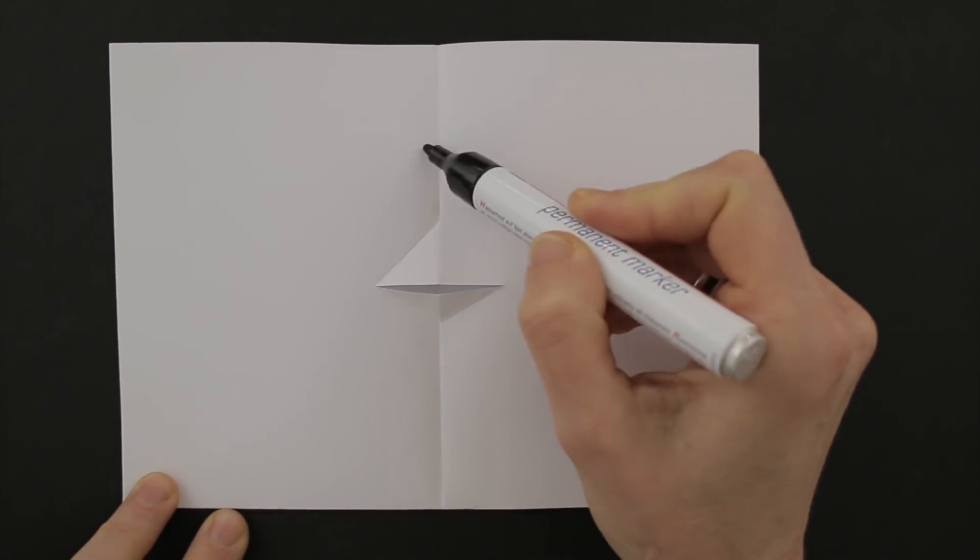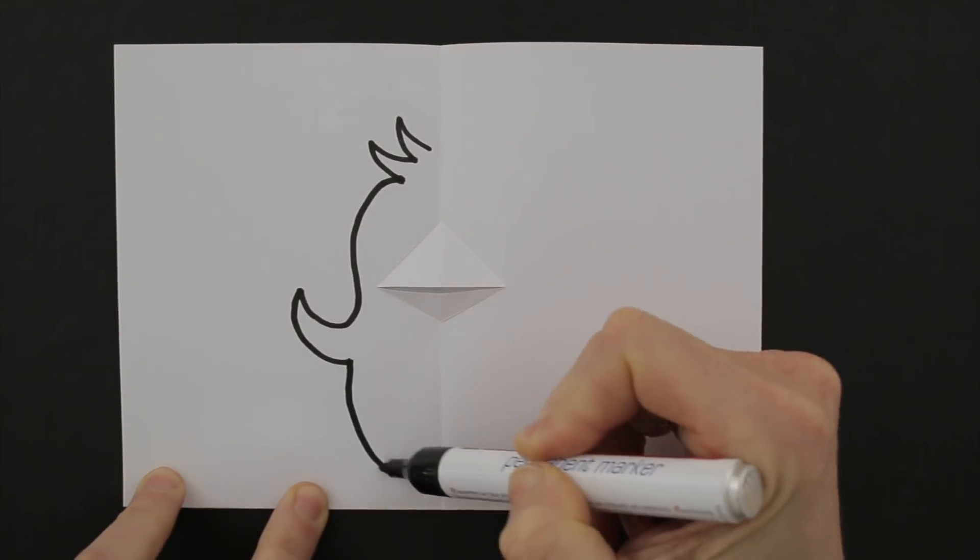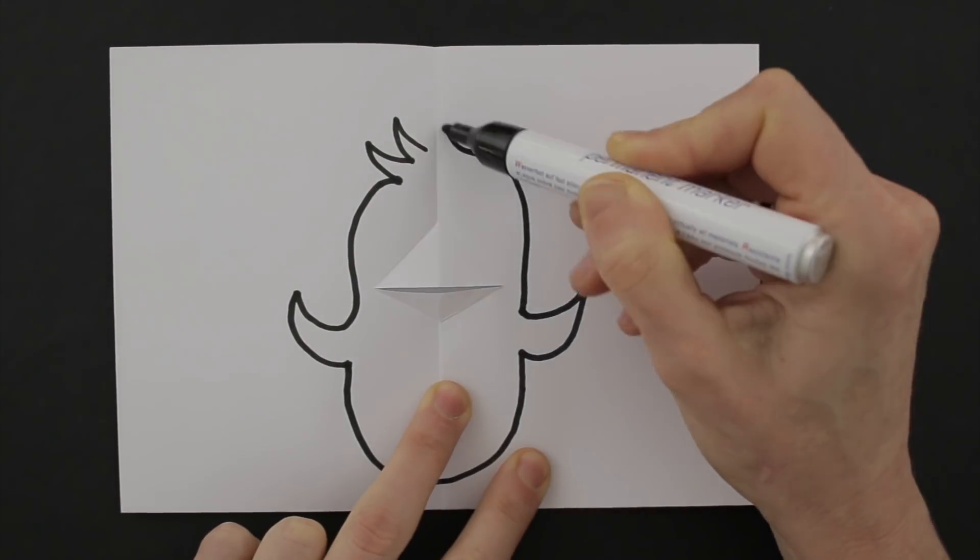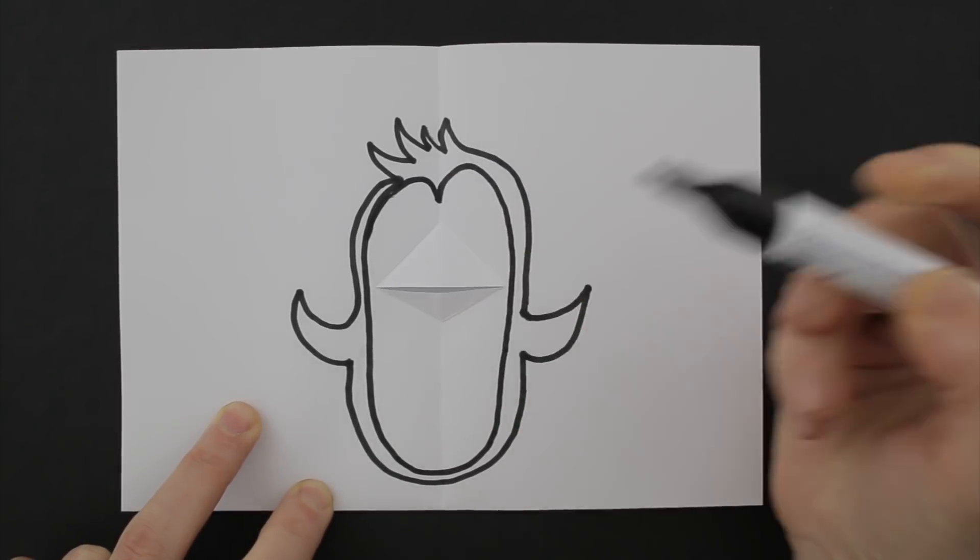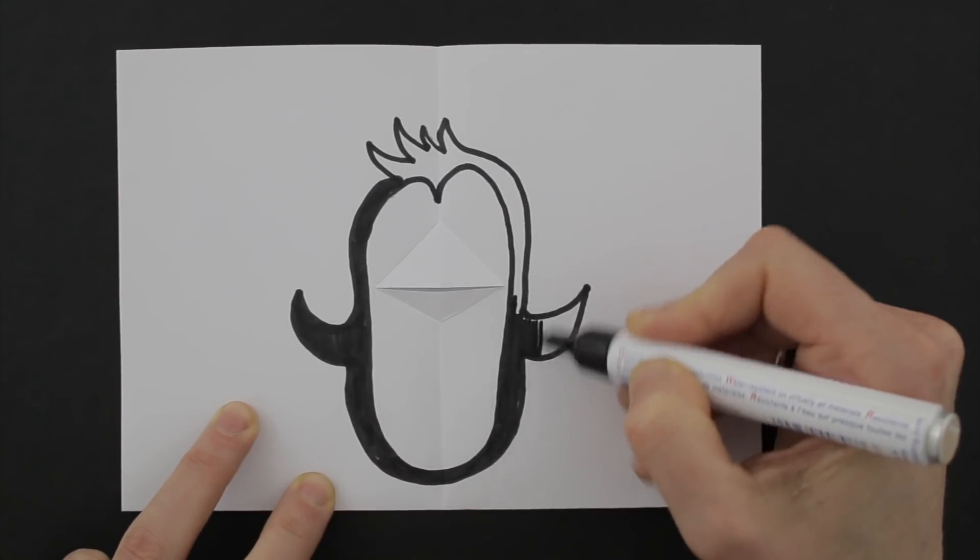With a fat marker, like a Sharpie, draw a figure around your beak. Then color it.